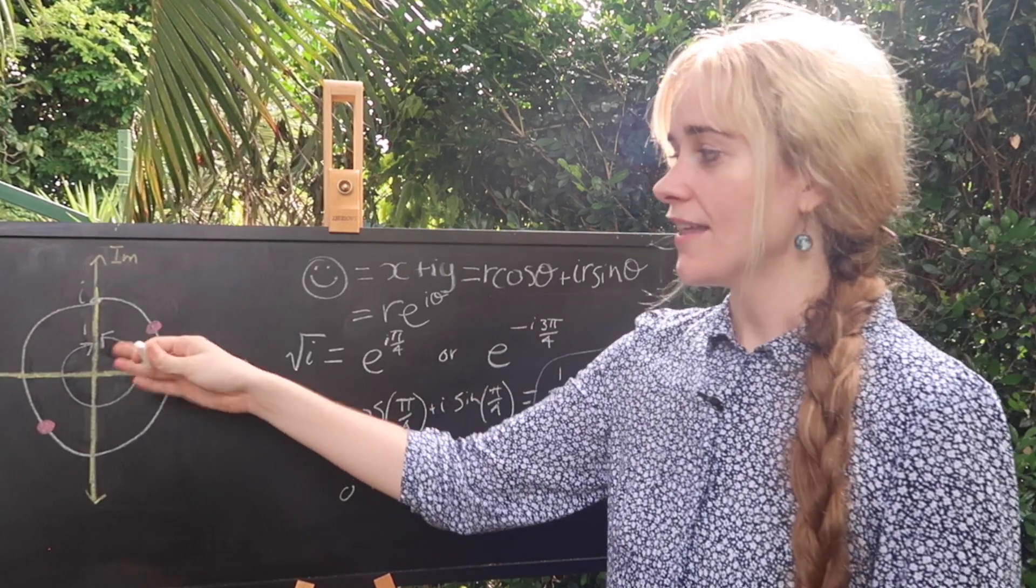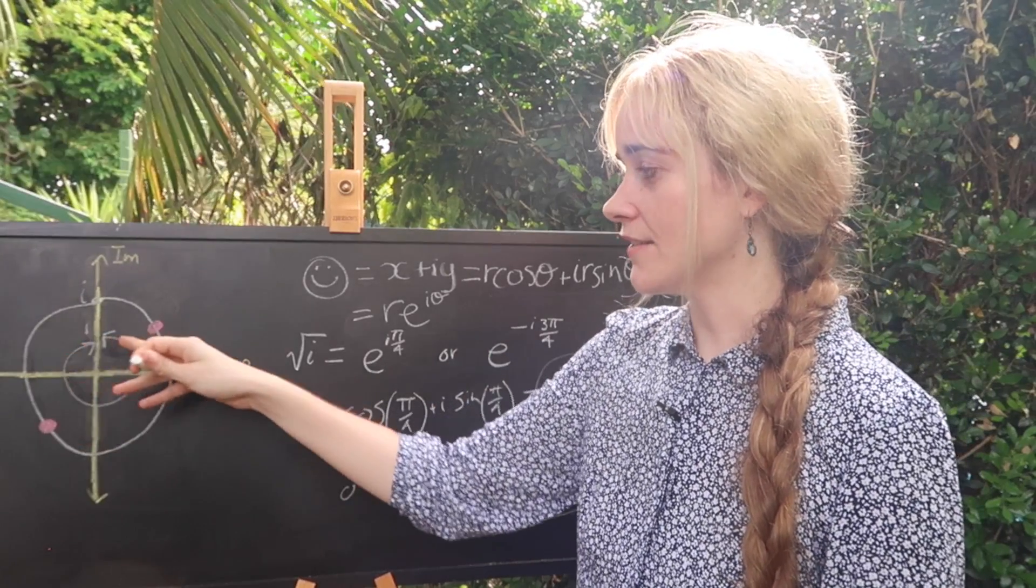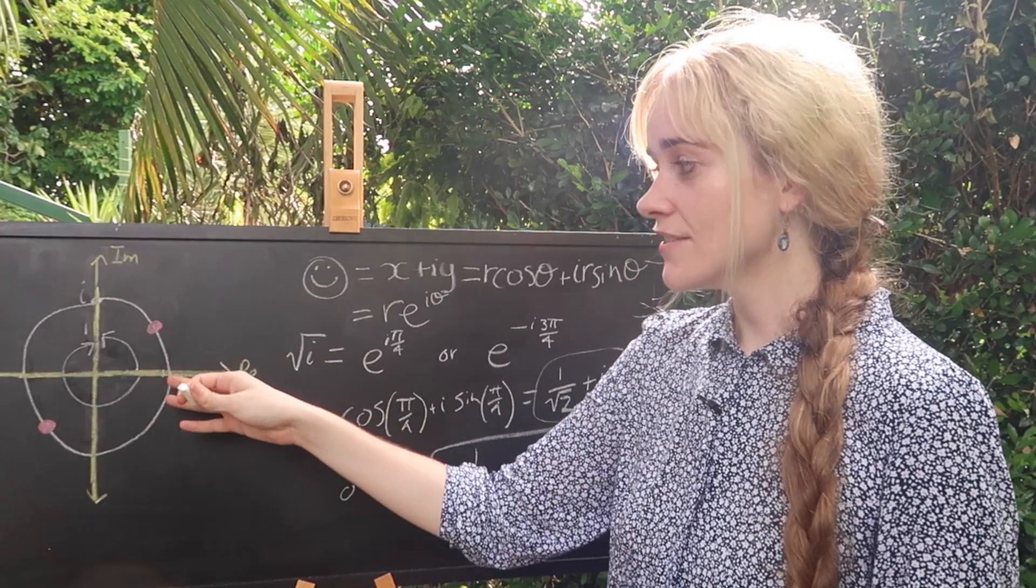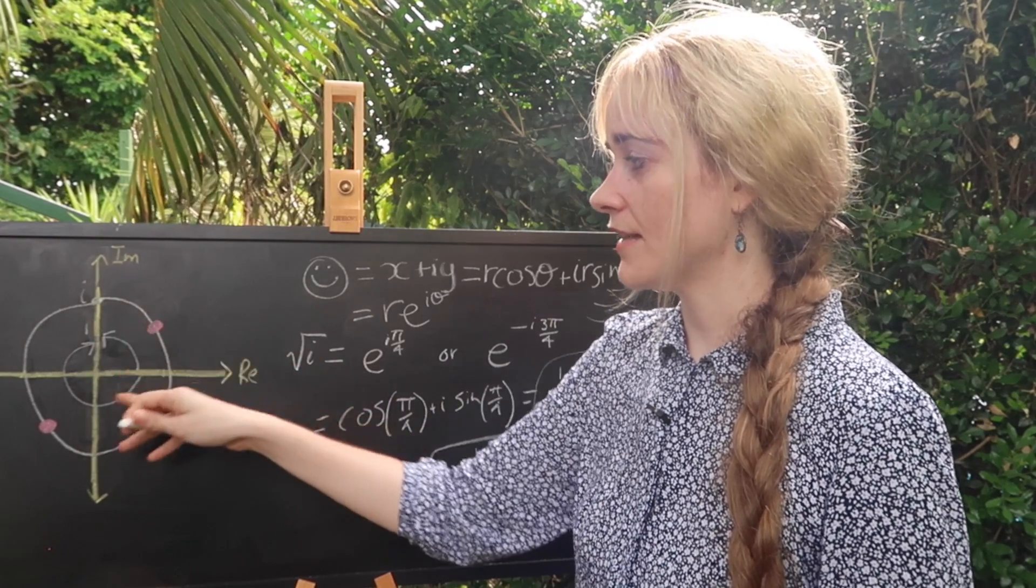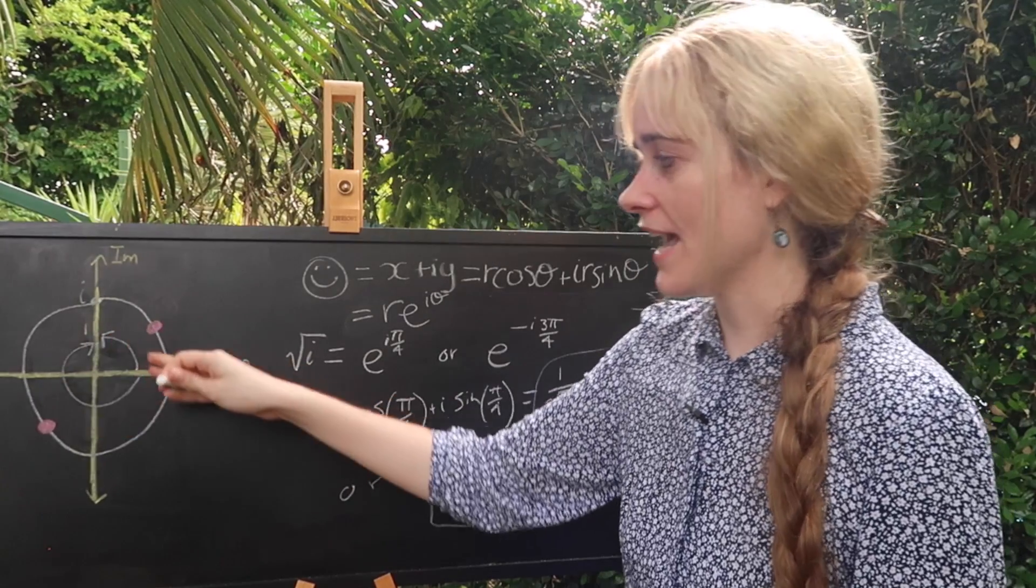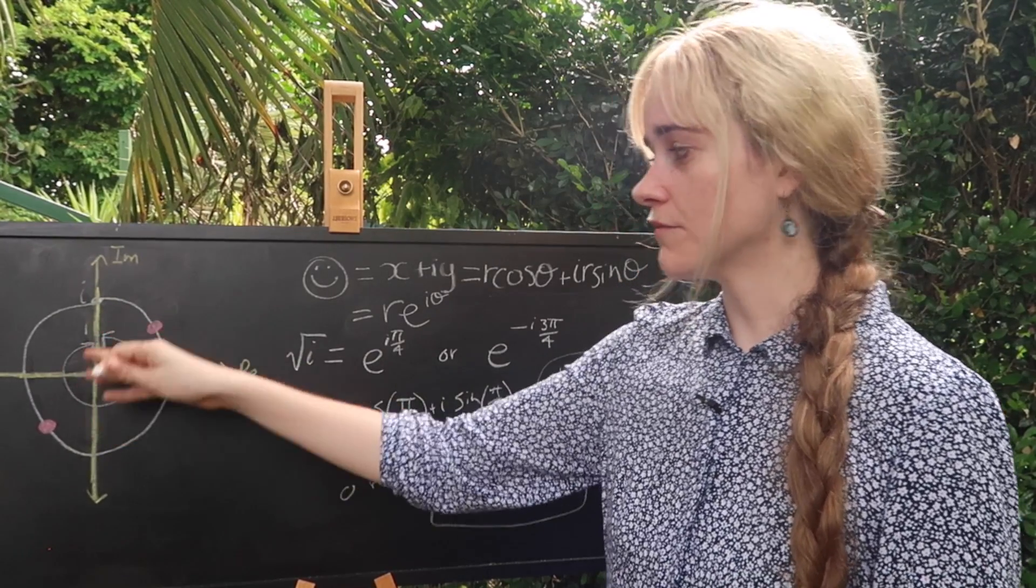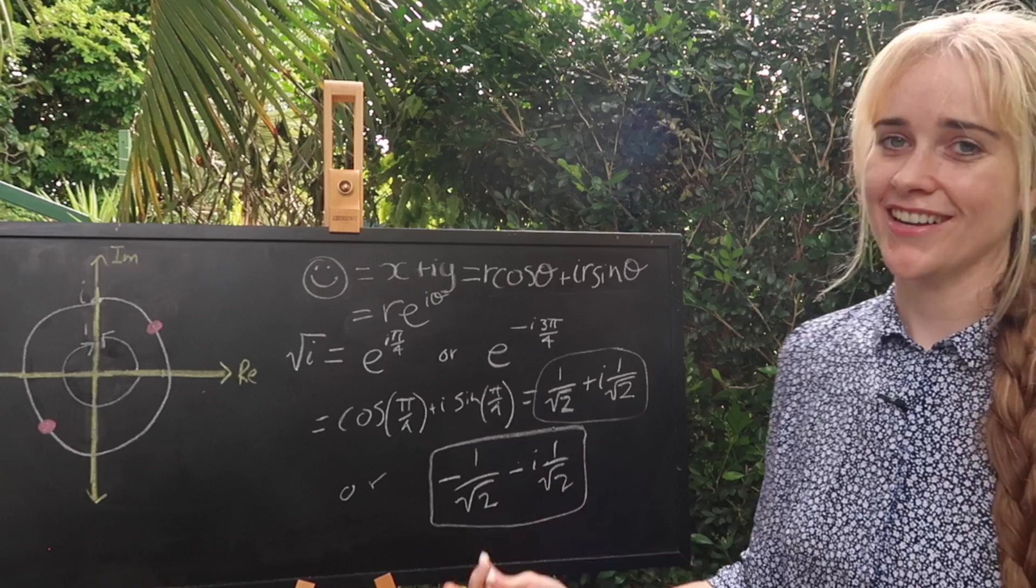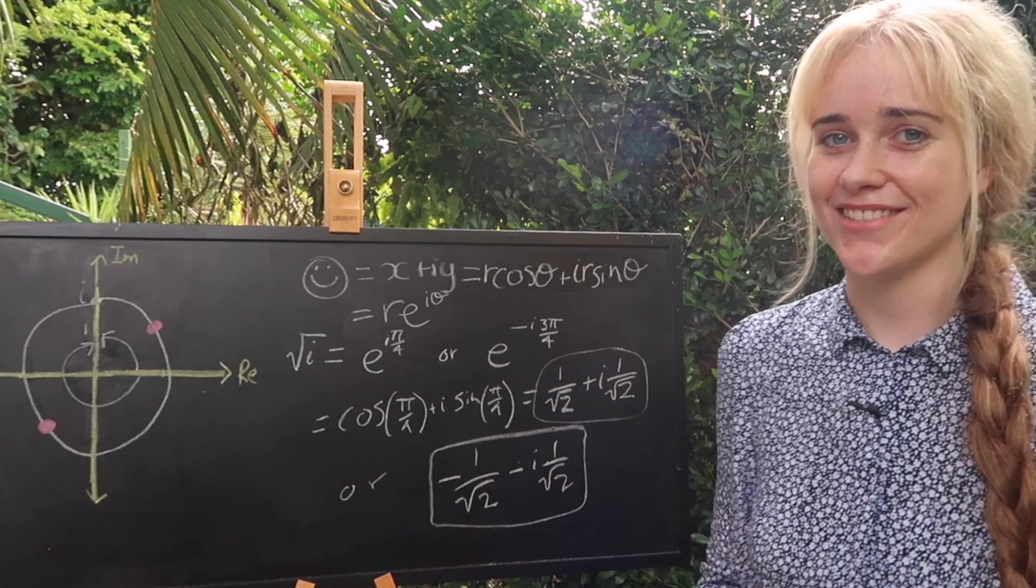Although you might want to think twice about how you find the two definitions of i, instead of like this way and this way you might want to just keep adding on two pi or a full rotation every time you're trying to define i to get the number of solutions you need.